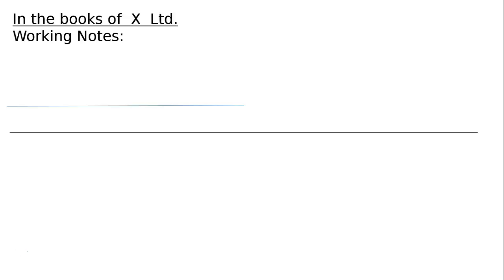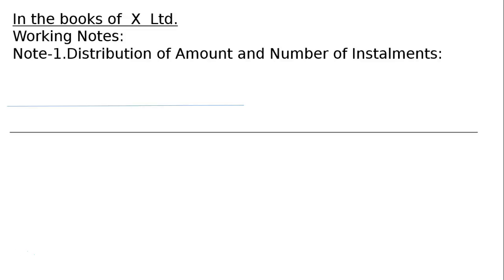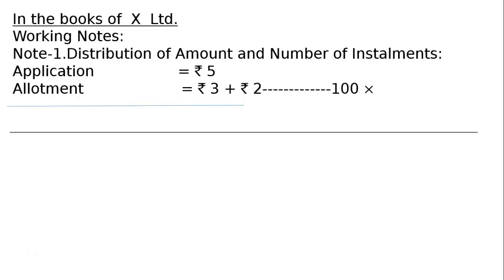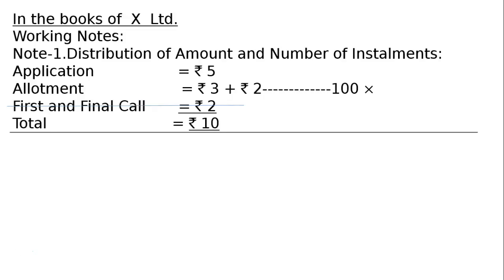In the books of X Ltd., working notes. Note 1: distribution of amount and number of instalments. Application Rs.5, allotment Rs.3 plus Rs.2 premium. A shareholder holding 100 shares failed to pay allotment. The first and final call of Rs.2 has not been made. Total is Rs.10 plus Rs.2 premium. Here premium was not received, hence it will be shown in the debit — debit in the first entry for forfeiture.